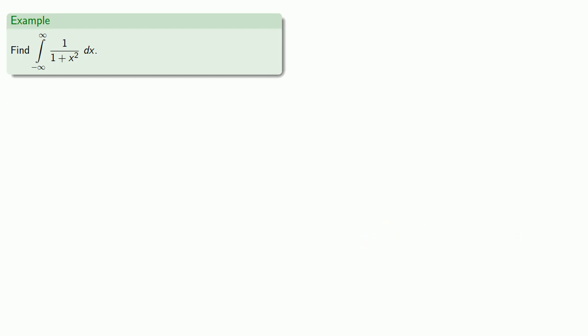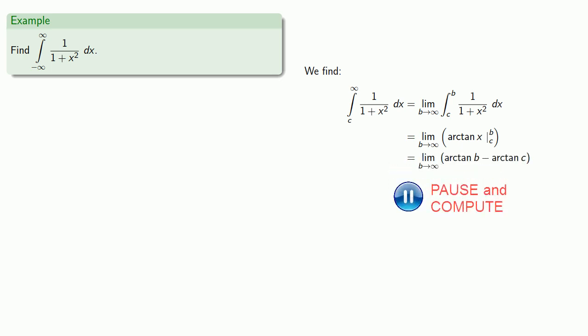So let's just find the integral from c to infinity. Which will be the limit as b goes to infinity of the definite integral. We'll evaluate the definite integral. Find the limit. Which exists regardless of the value of c. And so the improper integral has a definite value.